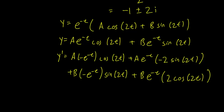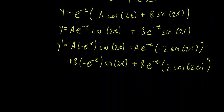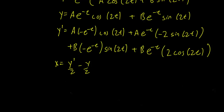So we have y and we have y prime. We know from the equation that x equals y prime minus y, all over 2. Collecting terms and factoring out e^{-t} over 2, we separate cosines and sines. The cosine coefficient comes from minus a in y prime and plus 2b from y prime, giving minus a plus 2b times cosine 2t.